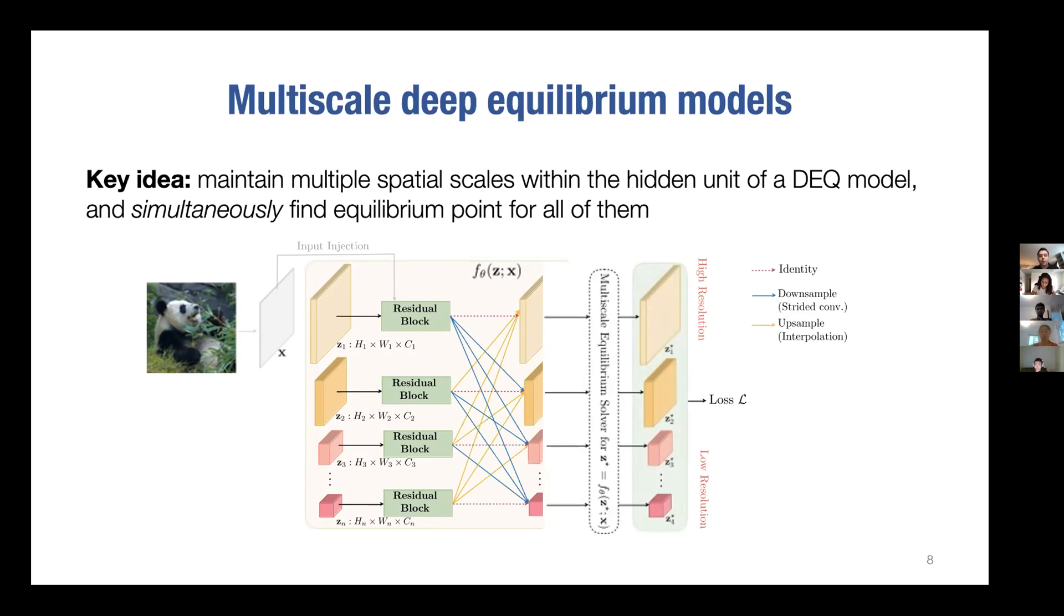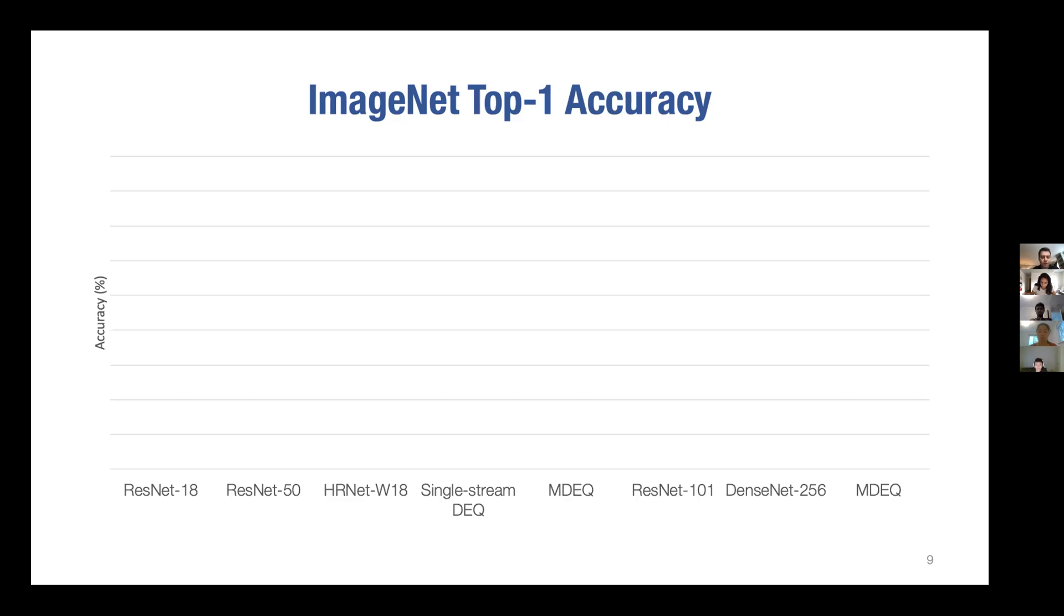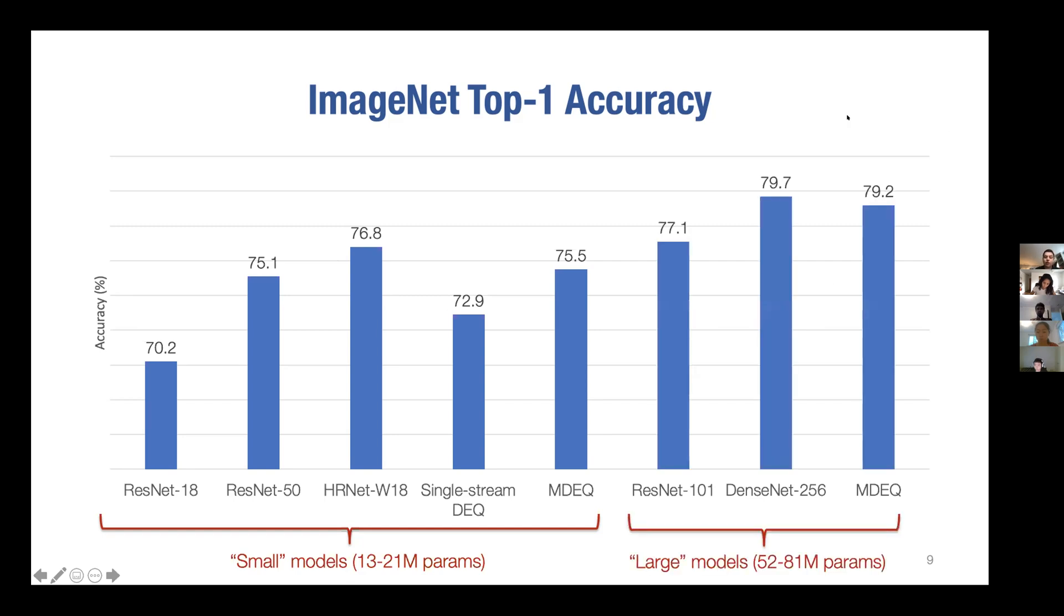We're not quite competing with the very very best ImageNet performance certainly, but if you look at comparable architectures we do pretty well. If you look at small architectures where they're say 2 million to 20 million parameters, we're doing competitively with things like ResNet 50 and things like that. Same with larger models - they do better with more parameters, but for the same number of parameters we're very competitive with the current state of the art, if not quite at the very very best state of the art.